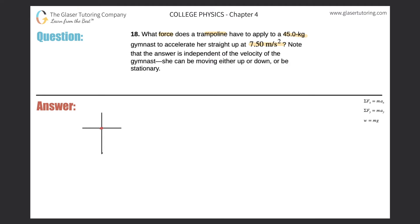So the free body diagram here is an arrow straight down. That will represent the weight of this gymnast, right? So W equals mg. And then the force pointing straight up will represent the force that the trampoline applies.